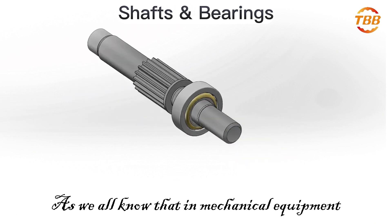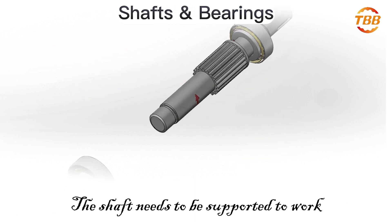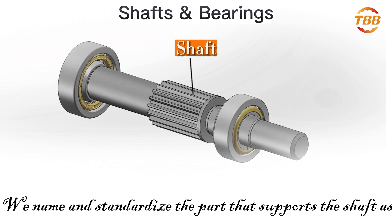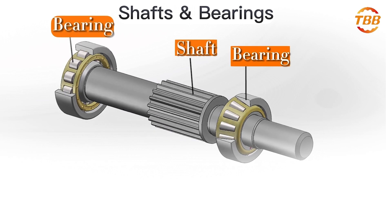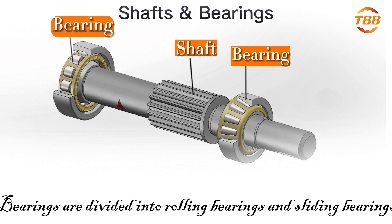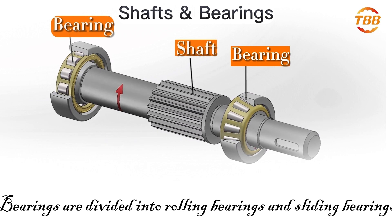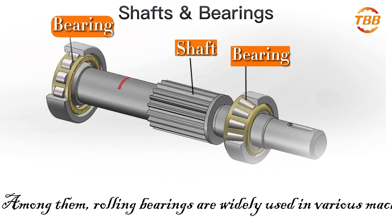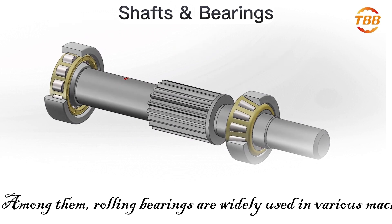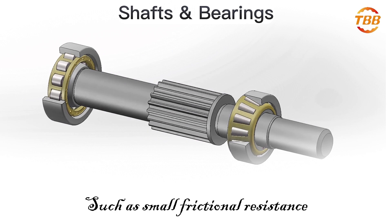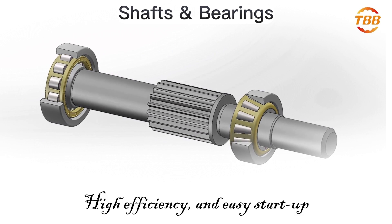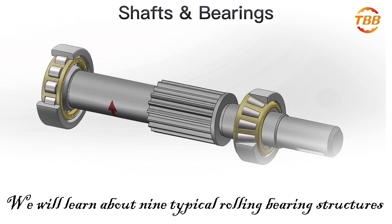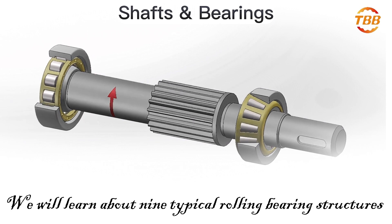As we all know, in mechanical equipment, the shaft needs to be supported to work. We name and standardize the part that supports the shaft as a bearing. Bearings are divided into rolling bearings and sliding bearings. Rolling bearings are widely used in various machinery because of their advantages, such as small frictional resistance, high efficiency, and easy start-up. In today's video, we will learn about 9 typical rolling bearing structures and their characteristics.